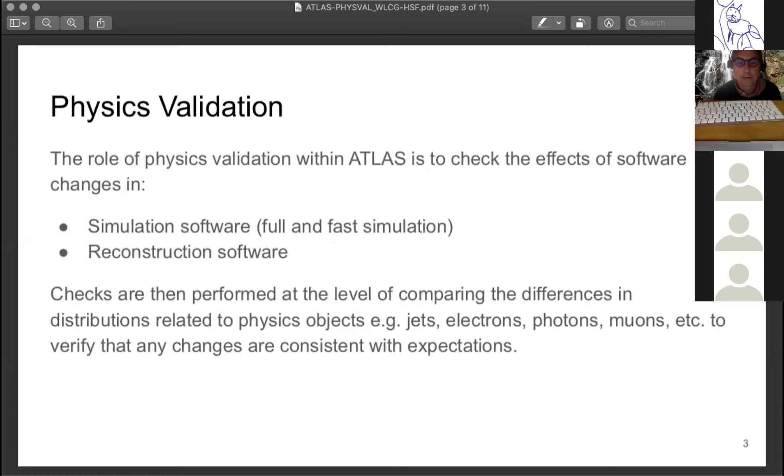The role of physics validation within ATLAS is to check and understand effects from changes in both the simulation software and the reconstruction software. We have different characteristics, and in practice we perform these checks on different physics objects like tracks, jets, leptons, or photons. We compare distributions related to these objects and verify that any changes are consistent with expectations. Of course, defining the expectations and what level of consistency we're looking for is not always straightforward.